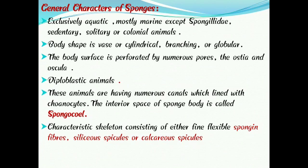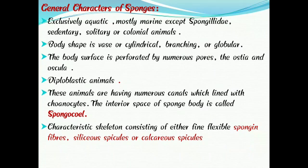Porifera are diploblastic animals, meaning the multicellular body consists of two germ layers: the outer ectoderm and the inner endoderm, with an intermediate layer called mesenchyma, also known as mesoglia. So diploblastic animals have two germ layers — outer ectoderm and inner endoderm — with a middle mesoglia or mesenchyma.